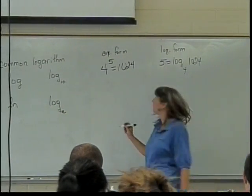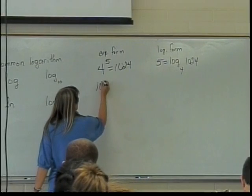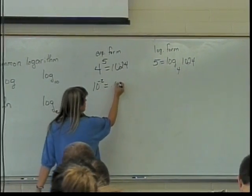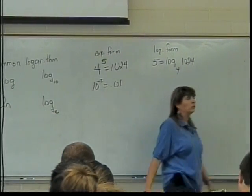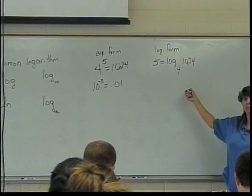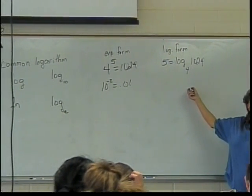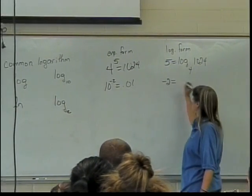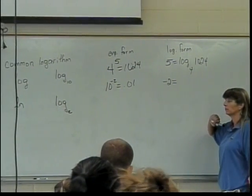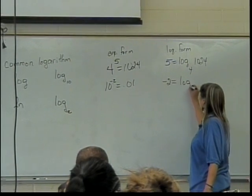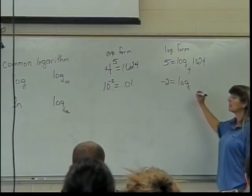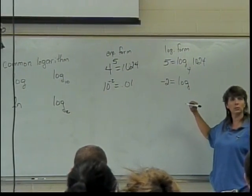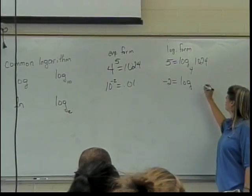What about this one? If I have 10 to the negative 2 is equal to 0.01, what would that look like in logarithmic form? Negative 2 equals log base 10, which you can just leave as log of 0.01.